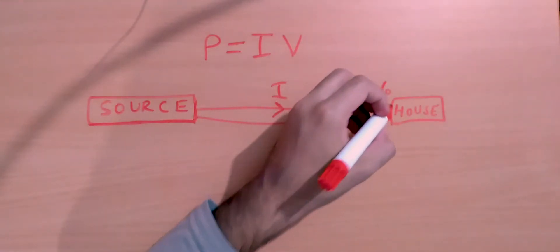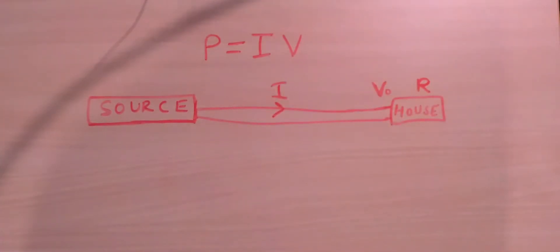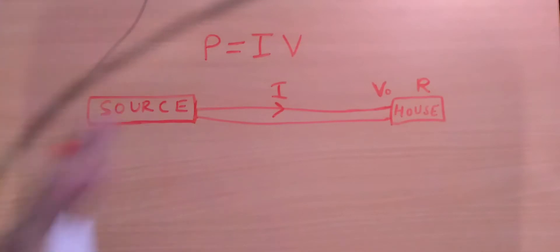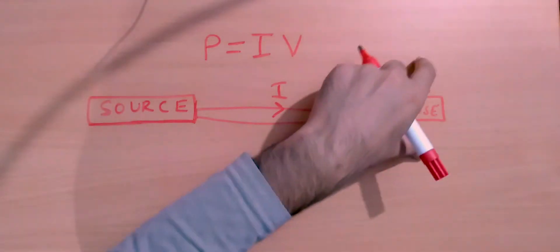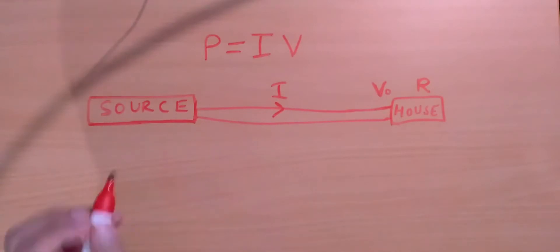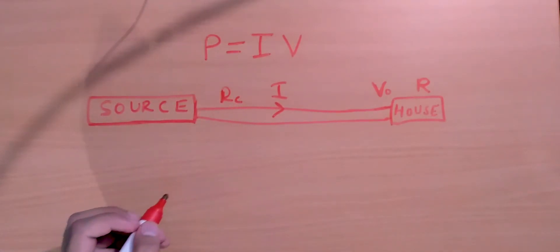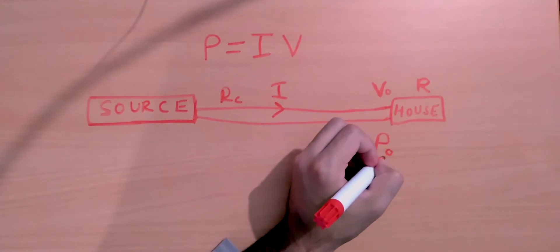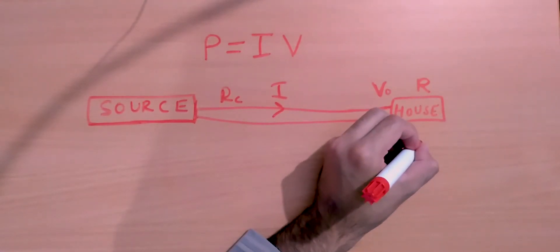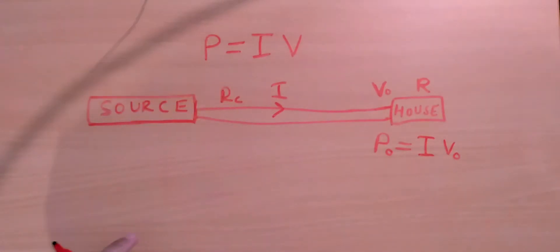Let's say the resistance of your house is R — by that I mean the net resistance of all the components you're powering, including your television, light bulbs, geysers, everything powered by electricity. The resistance of the connecting wires, let's call that Rc. The power being supplied to your house — let's call that Po, the power output — equals the current in the circuit times the output voltage Vo: Po = I × Vo.